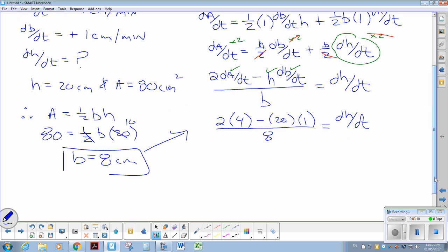dH by dt: So 8 take away 20, it's negative 12 over 8. It's dH by dt, which reduces down, divide top and bottom by 4. So dH by dt is negative 3 halves centimeters per minute.